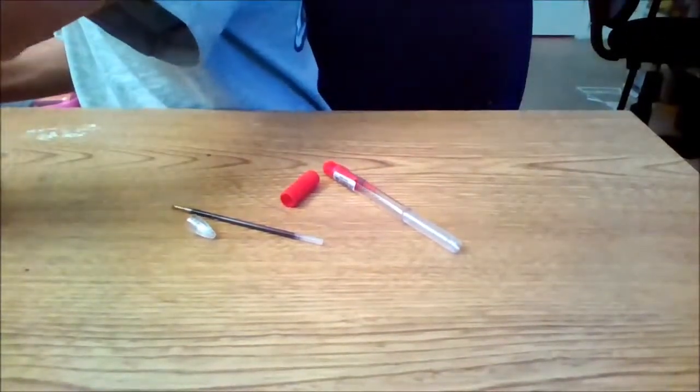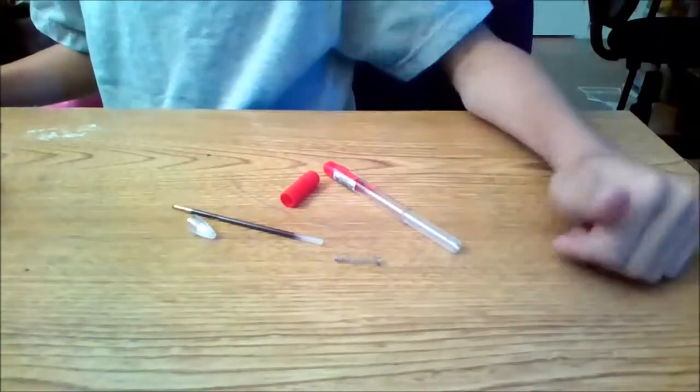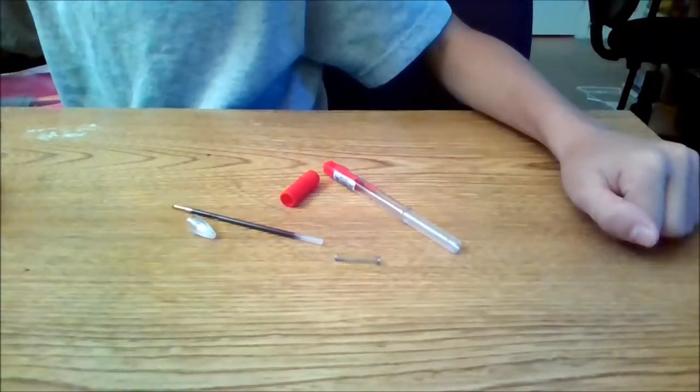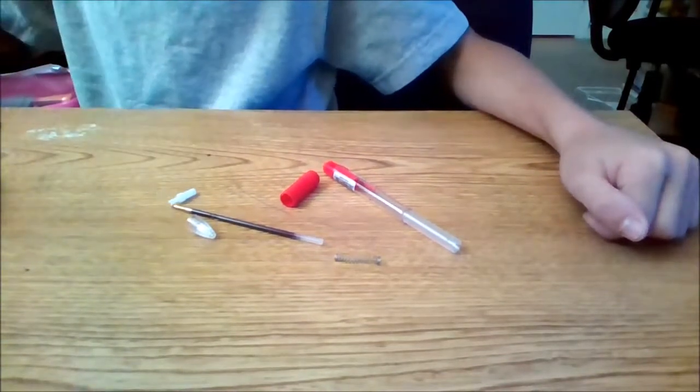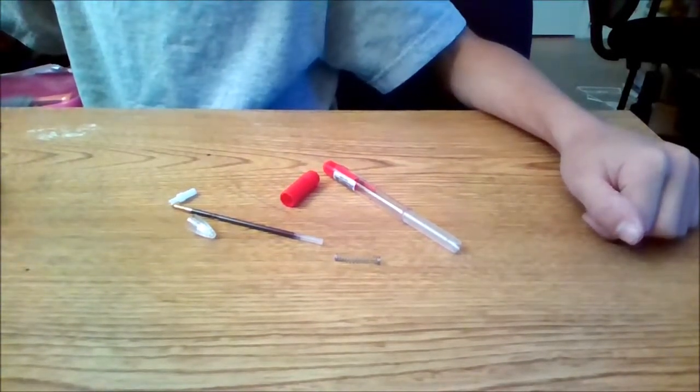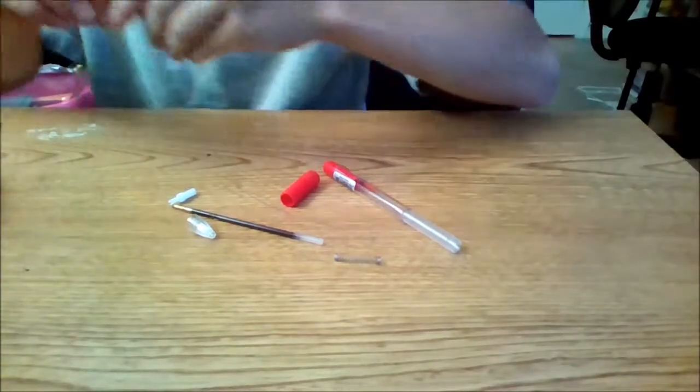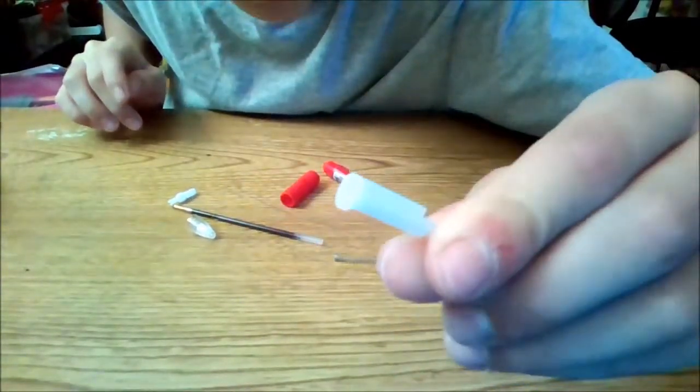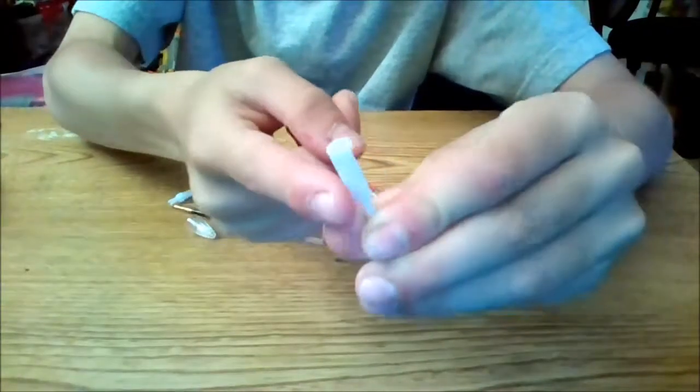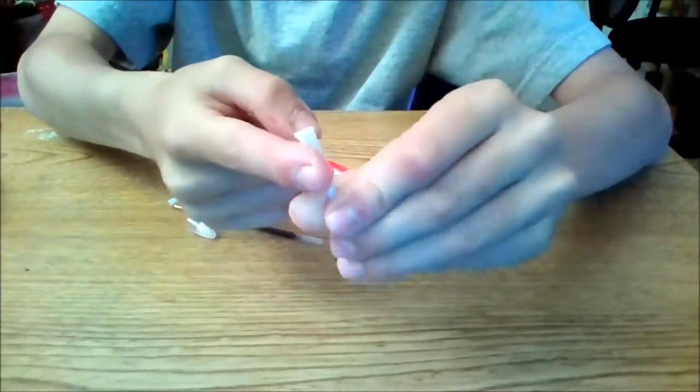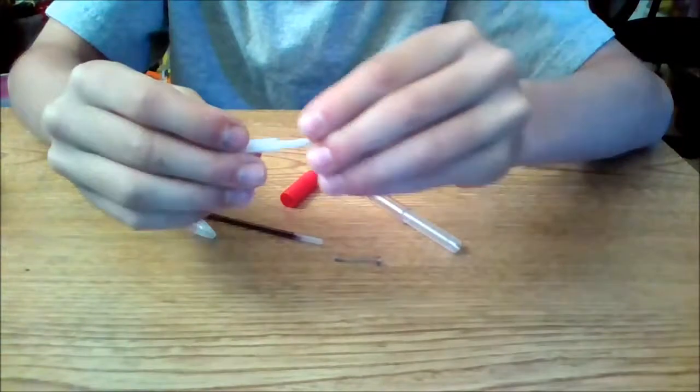But you would get a spring and this is the spring that came with it. What else came with it, this came with it. And what you will need is one of these parts, and you'll find this in the pen somewhere. It'll look like this and have like lines like this all around.